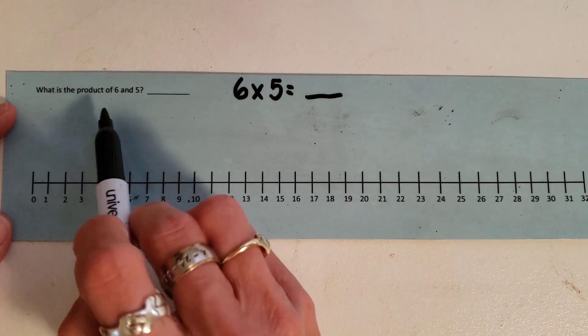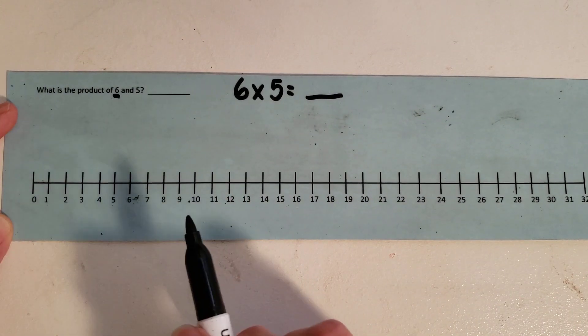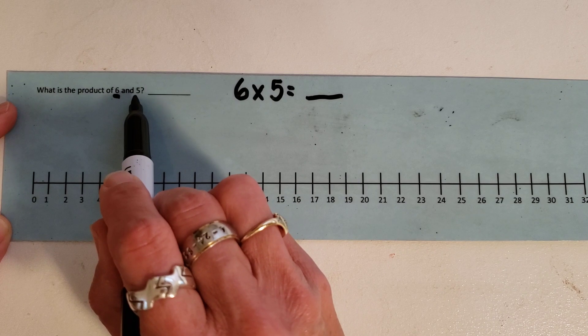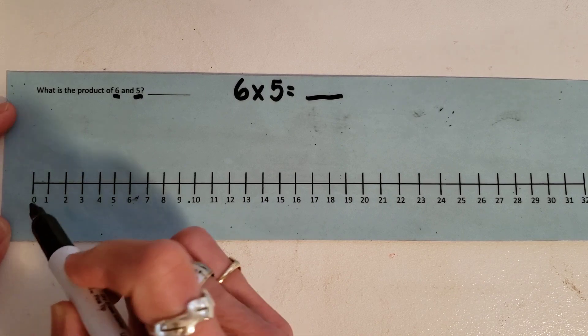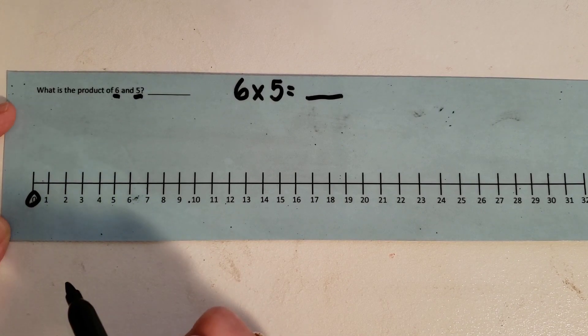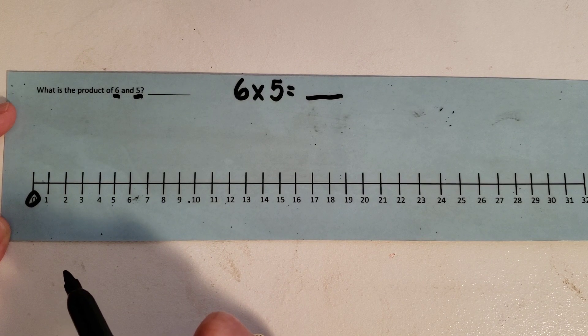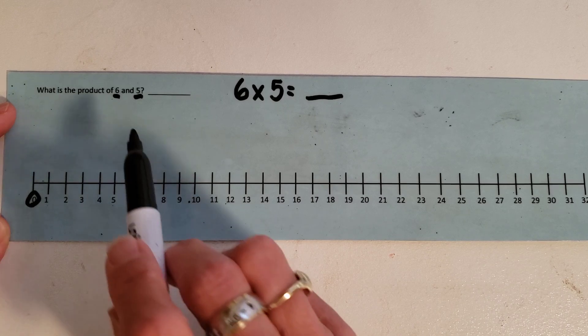Remember that the first number is going to tell us how many hops we're going to make and the second one is going to tell me how many are in each hop. All right, so I start with zero and I like to circle zero so that I know I'm starting there and I am going to hop over five.